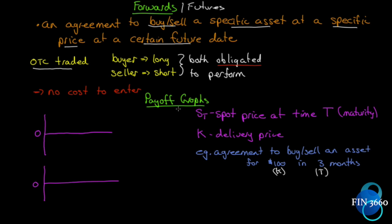Let's look at some payoff graphs. You're going to have to get used to these — there are a lot of them throughout the textbook. Here's the terminology: S sub t is the spot price at time t. A spot price is the price in the spot market — what you can buy or sell it for right then and there. You can think of the stock market as a spot market: what are 100 shares of IBM trading at right now? That's the spot price.